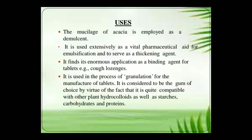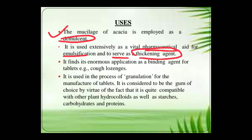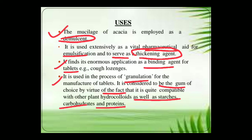Now let us focus on the different uses of this particular gum. The mucilage of acacia is employed as a demulcent. It is used extensively as a vital pharmaceutical aid for emulsification and serves as a thickening agent. It finds enormous application as a binding agent for tablets and is used in the process of granulation for the manufacture of tablets. It is considered the gum of choice because it is quite compatible with plant hydrocolloids as well as starches, carbohydrates, and proteins.